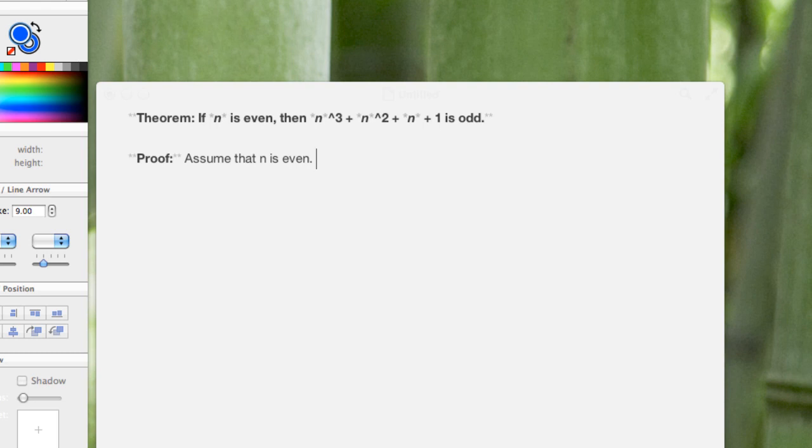Okay, so the reader now knows exactly what's on the table here. We're assuming that n is even and there's nothing else that's hidden.